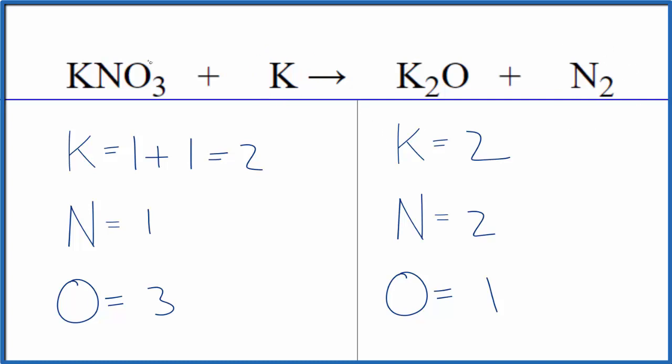Why don't we balance the nitrogens? We could put a two here. This two applies to everything, so three times two. That would give us six oxygens, one times two, two nitrogens. The nitrogens are balanced.